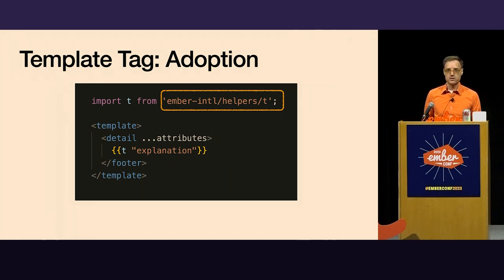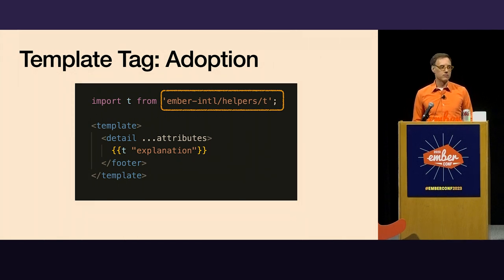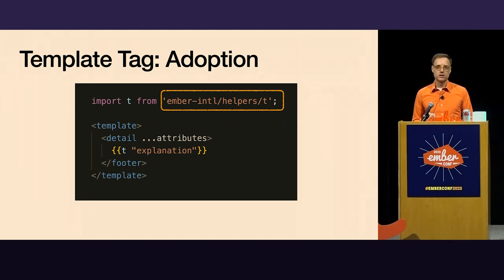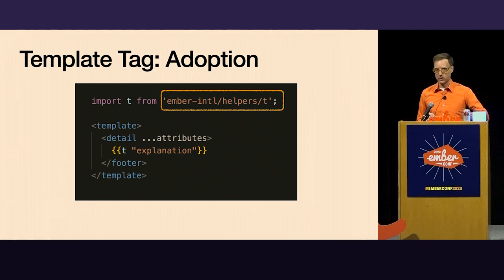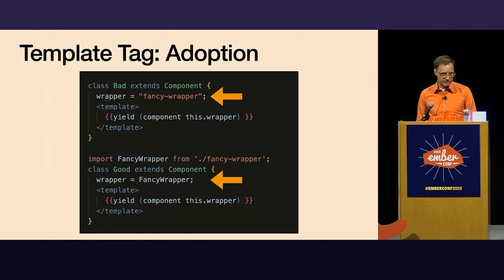It's also very possible to answer this question automatically and have a code mod to do this transformation. I know there are folks working within companies who've got their own and have talked about open sourcing them. A bunch of what I'm going to talk about under Embroider is effectively already doing a lot of what a code mod would have to do here. If you're interested in helping work on that, it's another great call to action for the community — to help take the cost of this change from O(n), linear in your application, down to something close to O(1), a constant cost of just running the code mod.